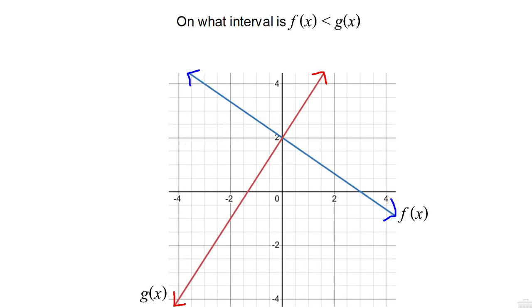And we'll do one more. Here we want f(x) to be less than g(x). We find the intersection point at x equals 0. And the blue function, f(x), is lower than the red function, g(x), to the right. This is our blue one. It's below the red one, to the right of 0.